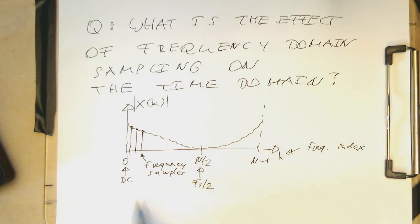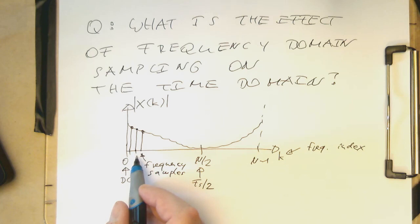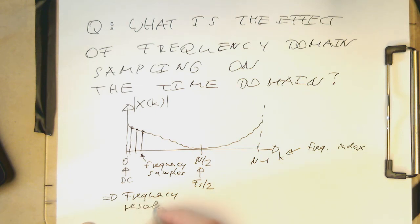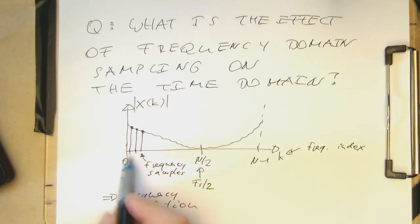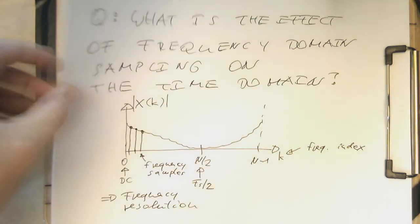The question is: what is the effect of having only a discrete number of samples? There is no sample in between, so therefore we have a certain frequency resolution. This means we cannot distinguish between frequencies which lie between adjacent samples. That's the lowest frequency spacing we can resolve.